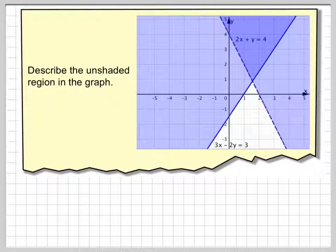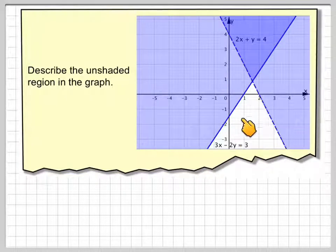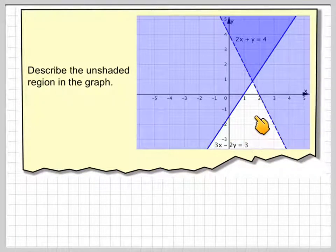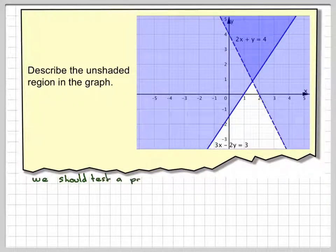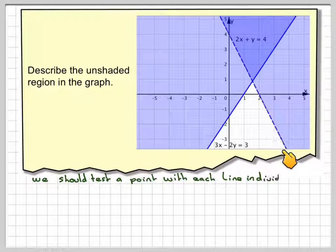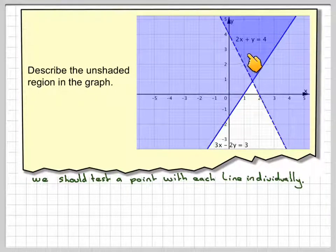Describe the unshaded region in the graph. What we've got here is a graph and we need to describe using inequalities what this unshaded region is. We need to consider each line individually, so we'll take this line here first, which is 2x plus y is equal to 4.